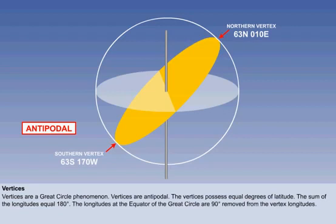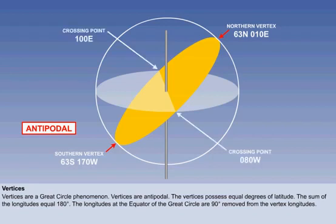Vertices have some interesting properties. The great circle will cross the equator at the two points whose longitude is 90 degrees from either vertex — in this case, 100 east and 80 west. The great circle will cross the equator at an angle equal to the latitude of its vertex. In this case, the angle is 63 degrees.